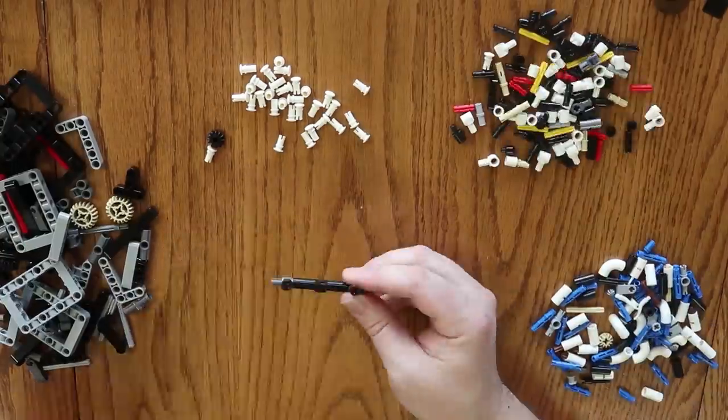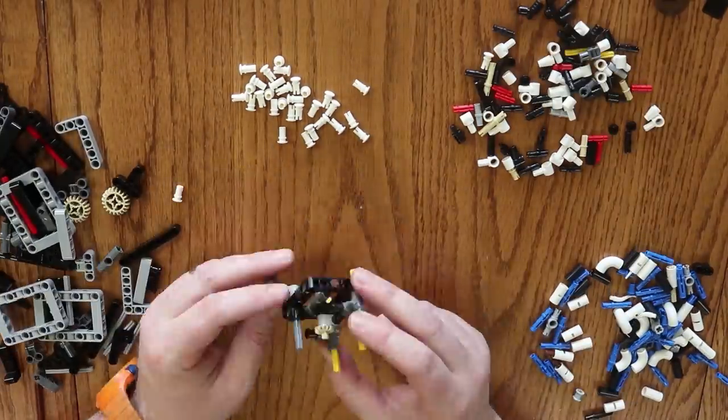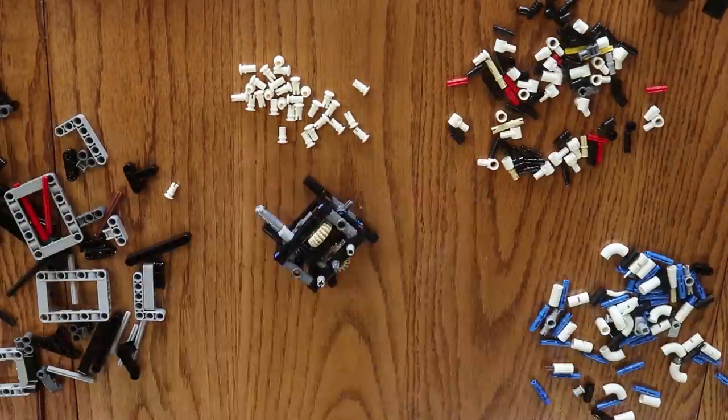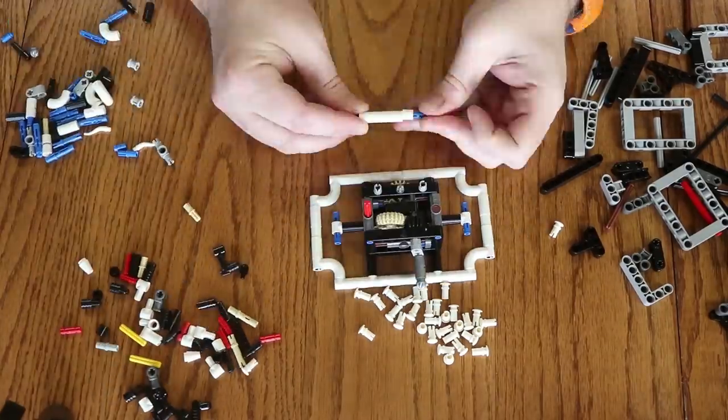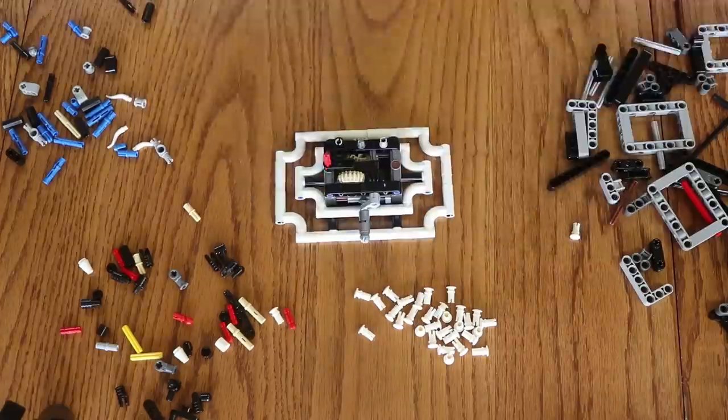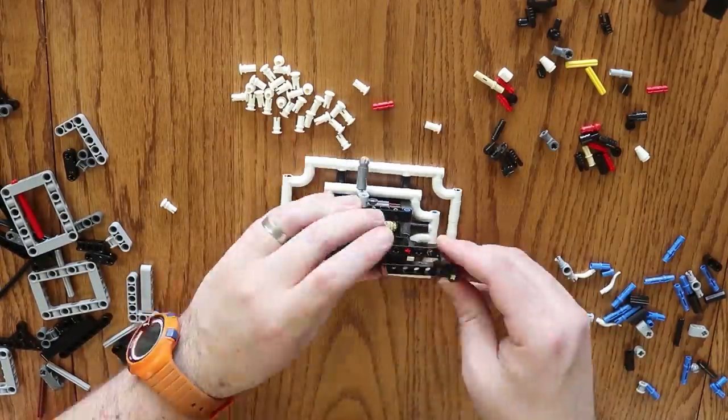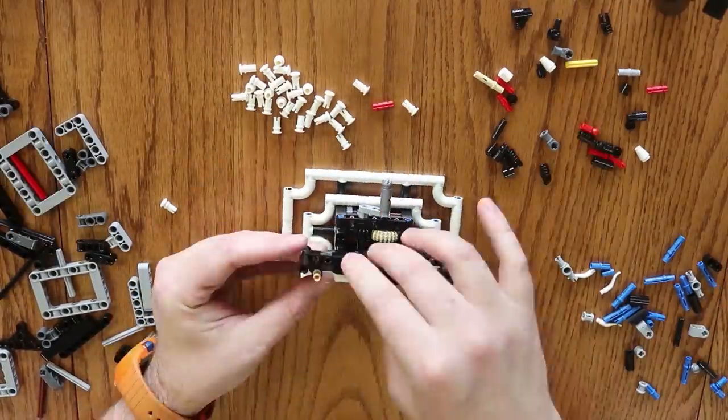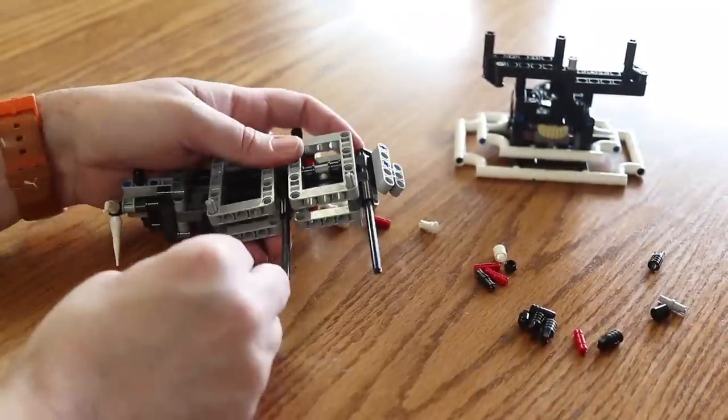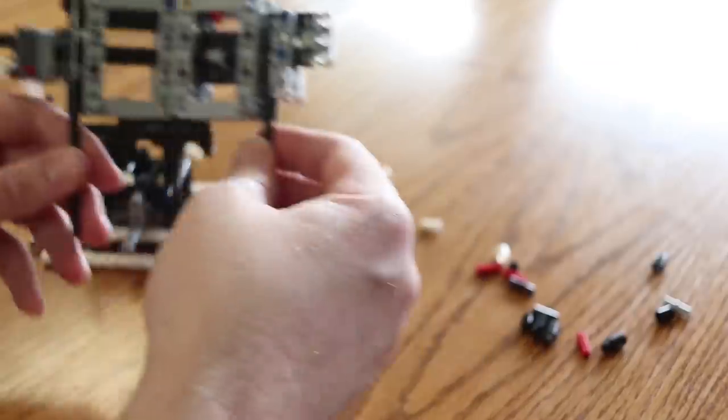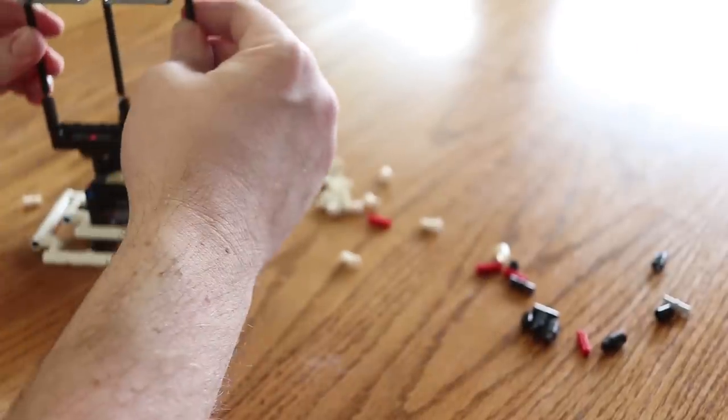In the first segment of the build, I assembled the gearbox that operates the motion of the Forma fish. The second portion of the build guided me through assembling a decorative stand for the model, and the third segment of the build creates armature that gives the Forma its fish-like movements. Next, I assembled the body of the fish and attached it upon its technic axles to the top of the gear assembly.